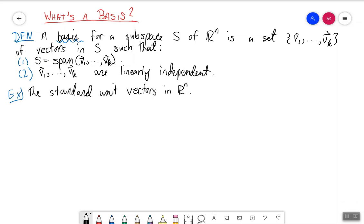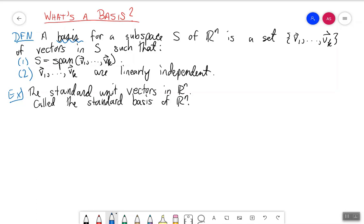Some examples. The standard unit vectors in R^n form a basis, and this basis, because we use it so commonly, is called the standard basis. So this is called the standard basis of R^n.